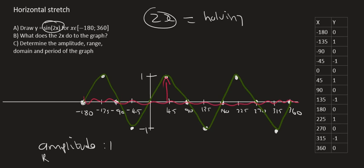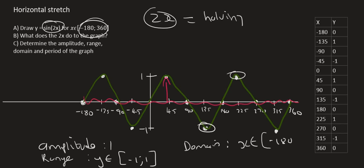The range is your y values. We see the lowest value is minus one, and the highest value is one. So we can say y is an element between minus one and one. The domain is the x values, and that's what they gave us. So that's from minus 180 up to 360.